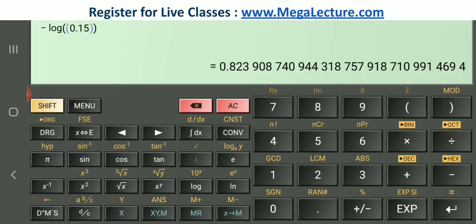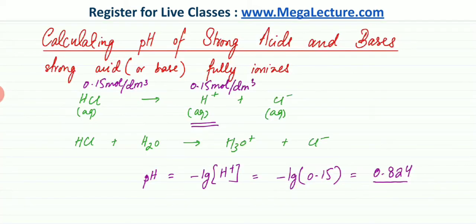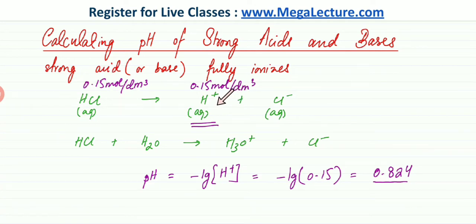The calculation gives: negative log of 0.15 = 0.823, and rounding to three significant figures gives 0.824. That's how you find the pH of a strong acid. If you have the concentration of HCl, you can directly find the concentration of H⁺ ions according to the ratio, take the negative log, and get that number.